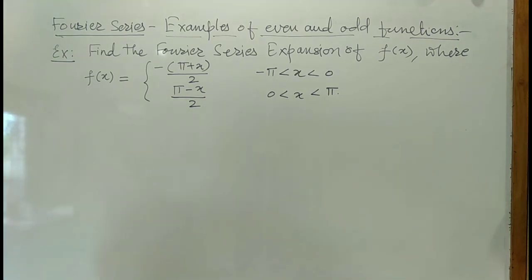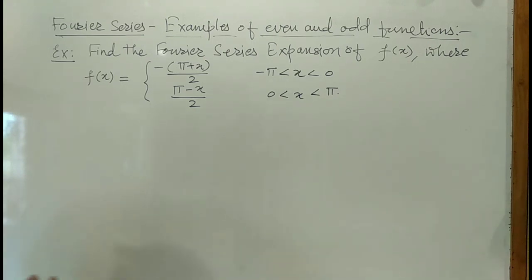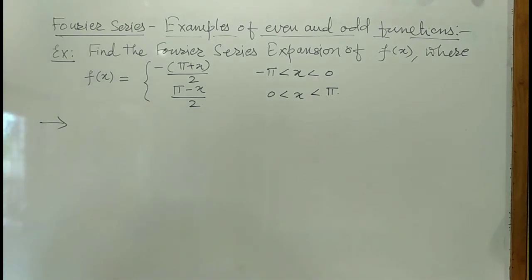Find the Fourier series expansion of the function f(x), where f(x) is defined as: f(x) equals minus pi plus x over 2 for minus pi less than x less than 0, and pi minus x over 2 for 0 less than x less than pi. When we try to find the Fourier series expansion, first of all we will check whether this function f(x) is even or odd.